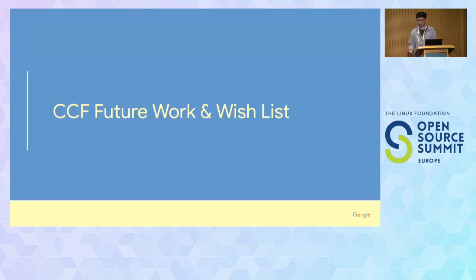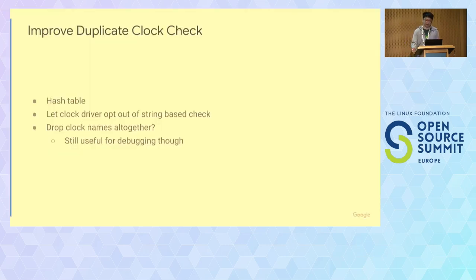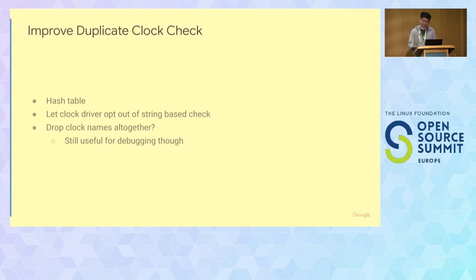That's what we've done so far. In the future, we plan to do a bit more. First, regarding the duplicate clock name check — we'll try to move to a hash table for the whole system, which should massively improve lookup time, though it might use a bit more memory. Stephen also mentioned that maybe drivers could opt out of this duplicate name check, because the names are really only used if you're using global lookups. If you're not using global lookups, maybe you could opt out, but it's more of a platform decision.